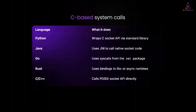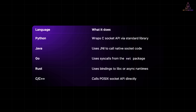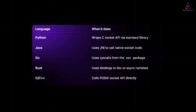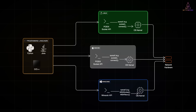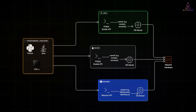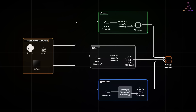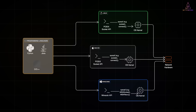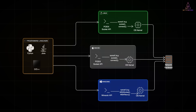The same is true for most languages. Python wraps the C socket API via its standard library. Java uses JNI to call the native socket API. Go uses syscalls from the net package. Rust uses bindings. And C/C++ calls the POSIX socket API directly. Any language can create sockets as long as it can talk to the OS, but under the hood, it's almost always using C-based system calls. These functions are implemented inside your operating system kernel, on both Linux and macOS. Syscalls here are like the doorbell to the OS kernel — your code rings it, the kernel opens the door and does the work. On Linux and macOS, socket-related syscalls follow the POSIX standard. On Windows, the API is different — it uses Winsock, or Windows Sockets, with functions like WSASocket or WSARecv. But at a high level, it's the same idea: your code asks, the OS kernel does, and the network hardware sends.